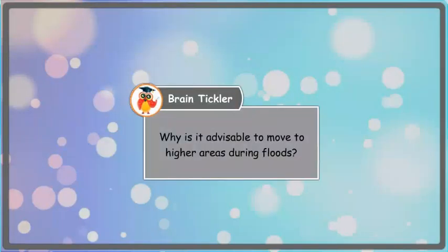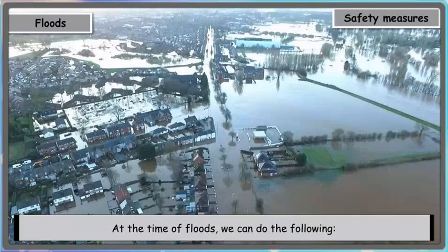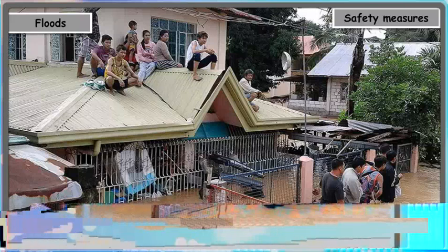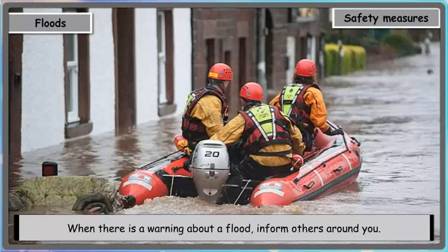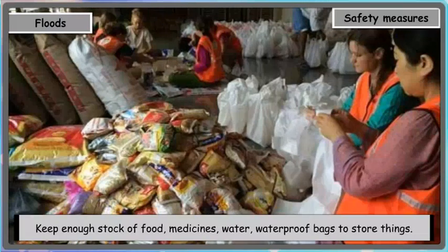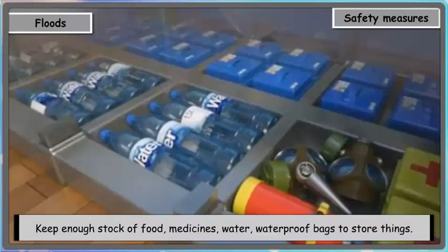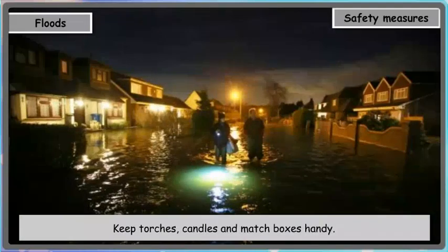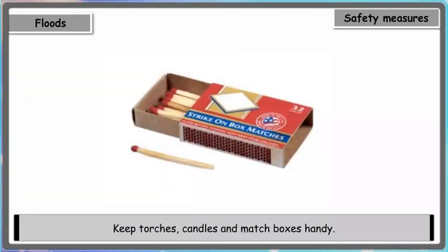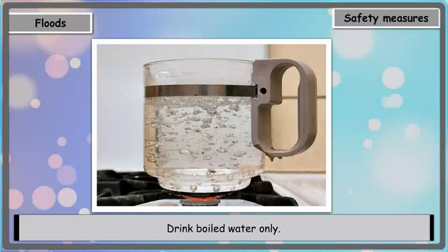Brain tickler: Why is it advisable to move to higher areas during floods? Safety measures — at the time of floods, we can do the following: move to higher areas like the roof of a house or a treetop. When there is a warning about a flood, inform others around you. Keep enough stock of food, medicines, water, and waterproof bags to store things. Keep torches, candles, and matchboxes handy. Drink boiled water only.